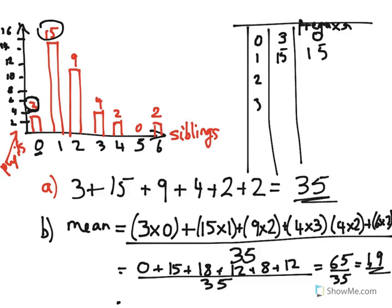That gives you 1.9 siblings on average across the class investigated. Now for the median: the easiest way when data is on a graph is to go from either side — the lowest number and the highest number — and cancel inward to find which number remains in the middle.